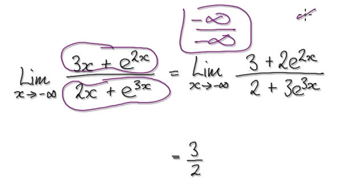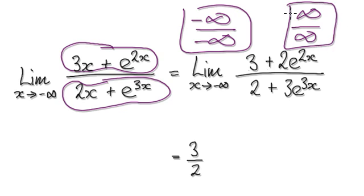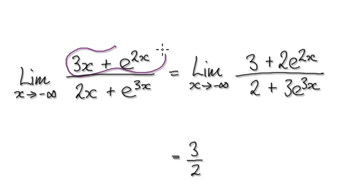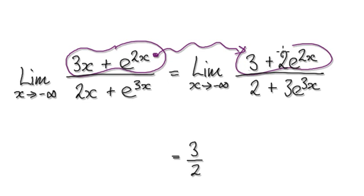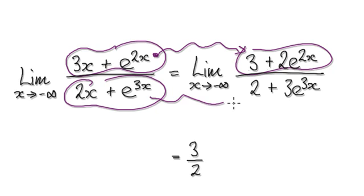So here you've got an infinity over infinity form. Because it's an indeterminate form, you can apply L'Hôpital's rule. Applying L'Hôpital's rule, differentiate the numerator — that gives you this — and differentiate the denominator — that gives you this.